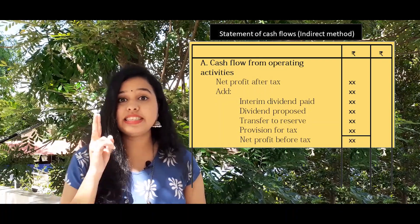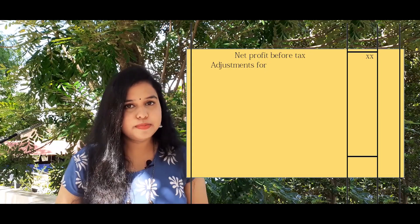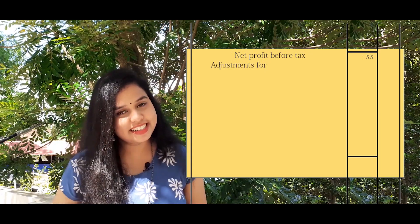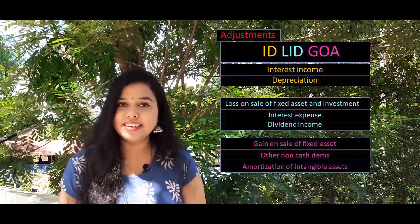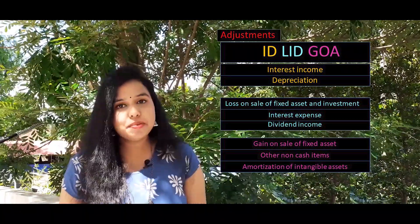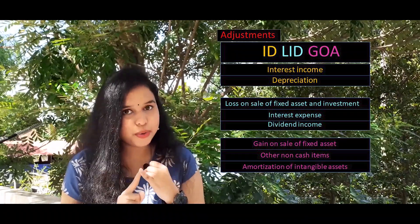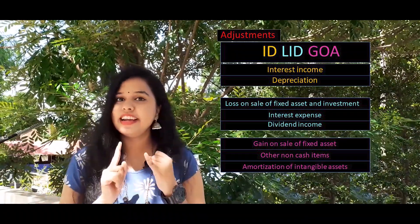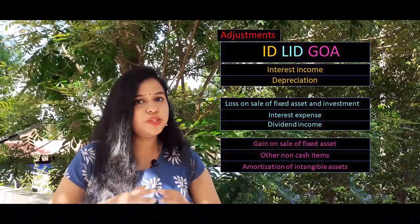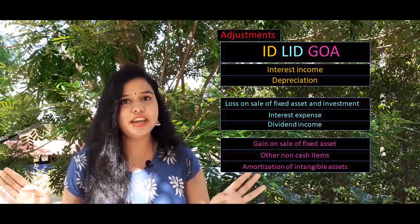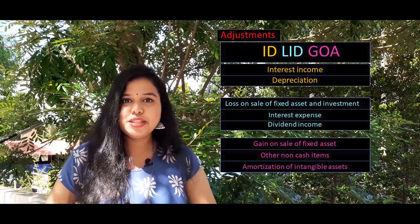That gives us net profit before tax — our second N. We then add a few adjustments using the adjustment code. The key letters in the code are ID, LID, GOA.